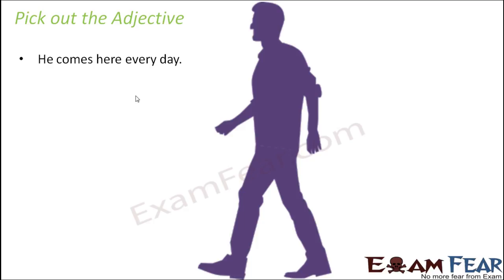Let's look at the next example: He comes here every day. Which is the adjective? First try to find the noun in the sentence. Here you have 'day,' which is a noun. So what is adding more meaning to the word 'day'? 'Every' is the word adding more meaning to 'day.' He comes every day — so 'every' is the adjective here.